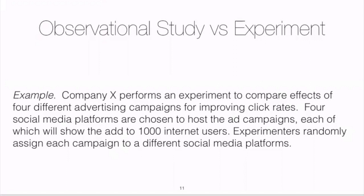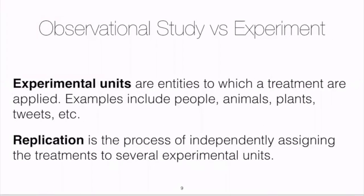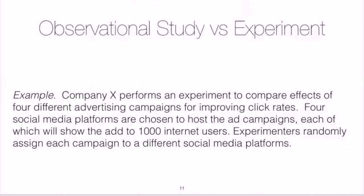There are four campaigns and four platforms, so there is no replication. A replication is the process of independently assigning the treatment to several experimental units. We've assigned the treatment to social media platforms, and within each platform users click or do not click the ad. In a future lesson, we'll learn how blocking might help us gain replication here.